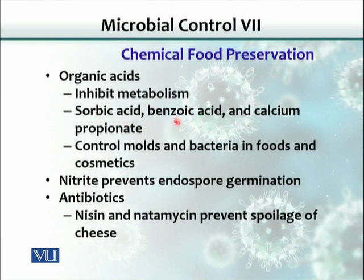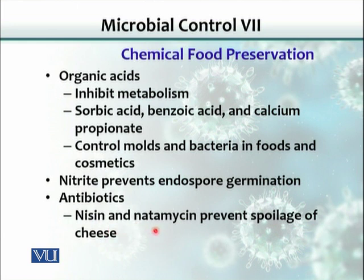Examples of food preservatives include sorbic acid, benzoic acid, and calcium propionate. Nitrites are also used; they prevent endospore germination. Sometimes antibiotics are also added into food as preservatives. Very commonly used antibiotics are nisin and natamycin, especially for prevention of cheese spoilage.